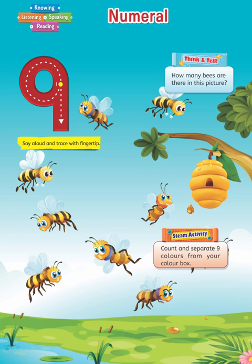Guidelines for teachers. Make the children learn tracing, speaking and writing the numeral nine. Tell them about the objects that are naturally found as nine entities — nine planets in the universe, etc.